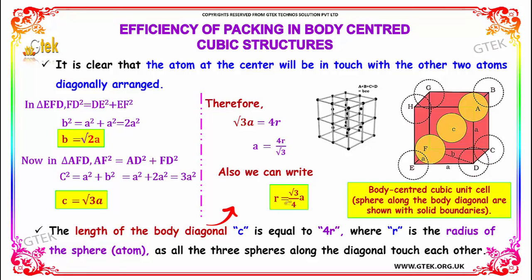So √3 · A = 4R, and A = 4R / √3. We can also write R = (√3 / 4) · A. The length of the body diagonal C = 4R, where R is the radius of the sphere, as all three spheres along the diagonal touch each other.